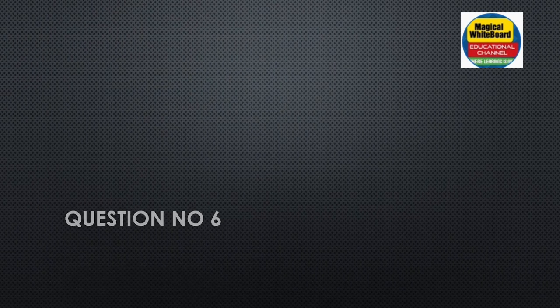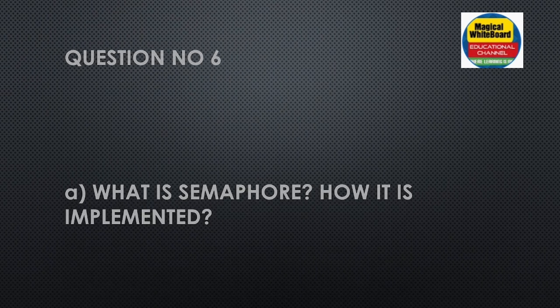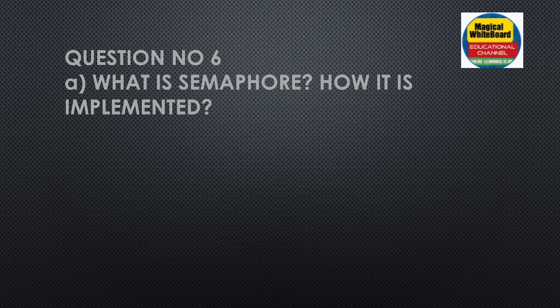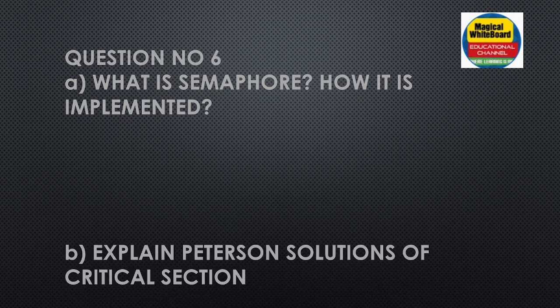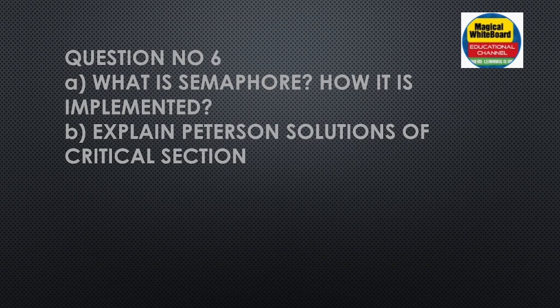Question number six: what is a semaphore and how is it implemented? Semaphore with wait and signal operations is a definite question. Next, explain the Peterson's solution for the critical section problem.